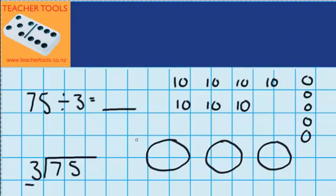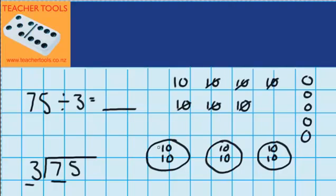The first question I ask myself is: can I share those seven groups of ten into three groups? And I can. I could put one in each group, and then a second group of ten in each group. So I've put two groups of ten, or twenty, in each group. I can record that over here by just putting a two, because I'm in the tens column. So this isn't actually a two — it represents twenty, or two groups of ten.